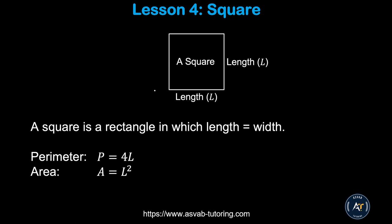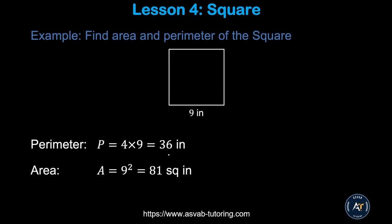Now we'll learn how to find area and perimeter of a square. A square is a four-sided shape where all sides are the same, so length and width are equal. The perimeter is 4 times the side length (l), and the area equals l squared.